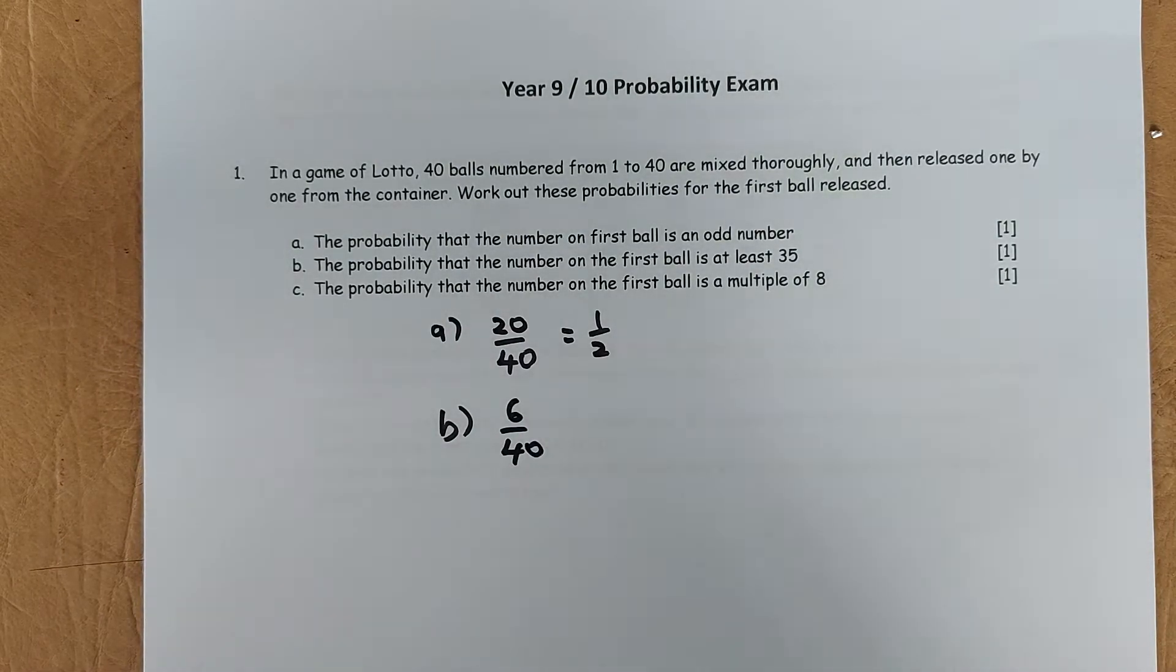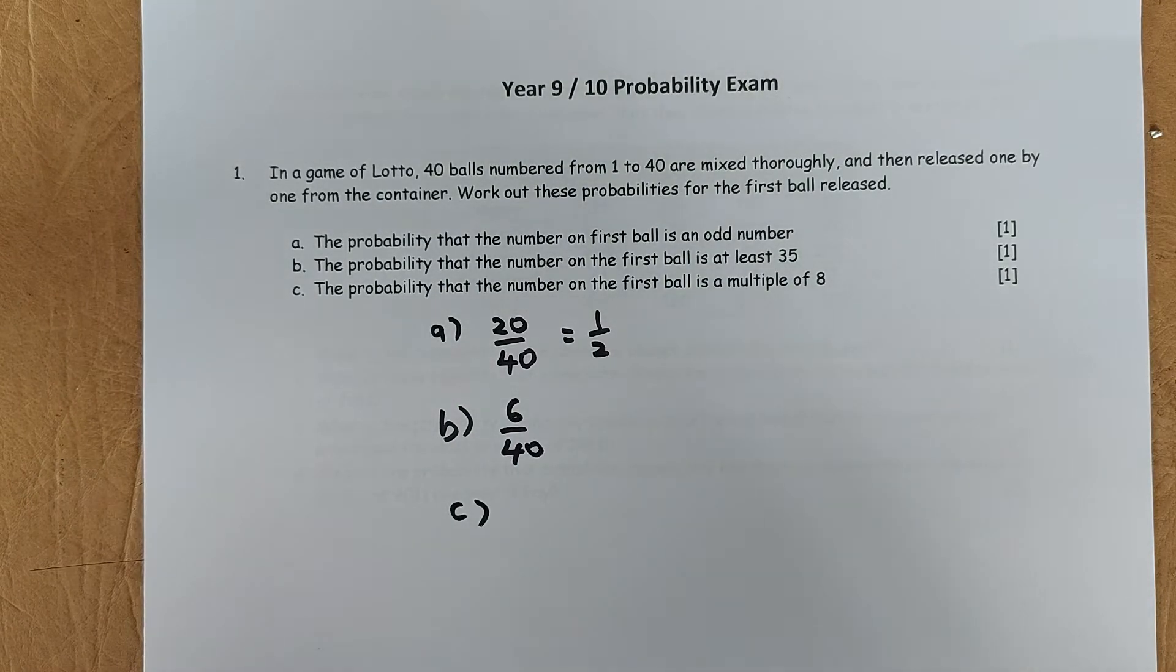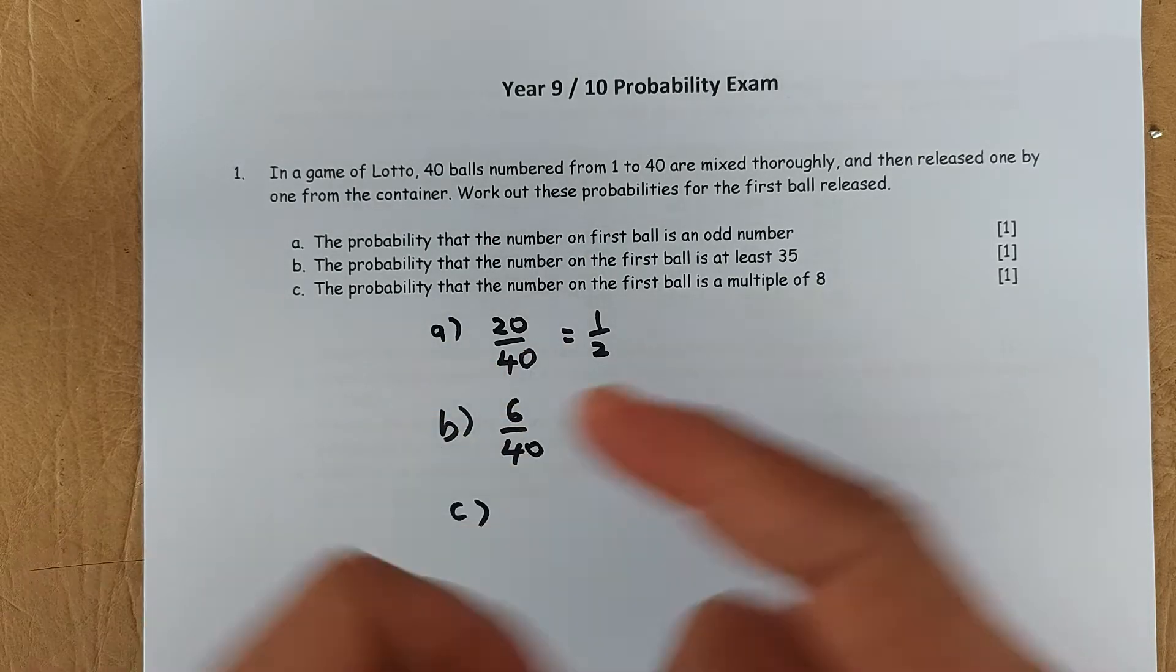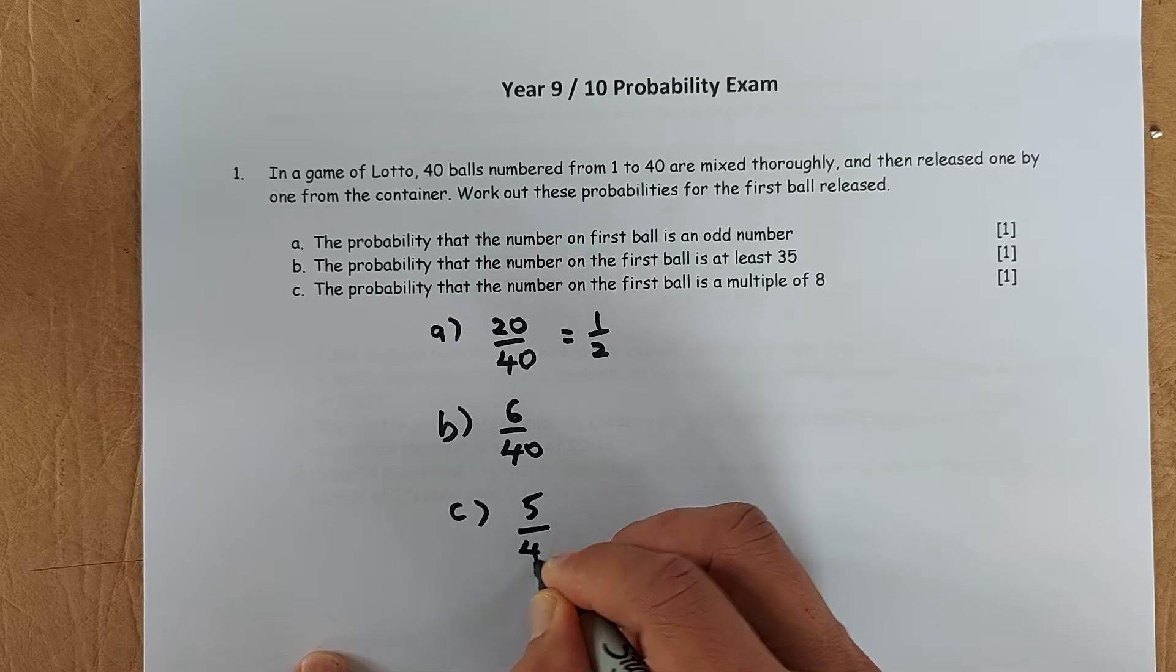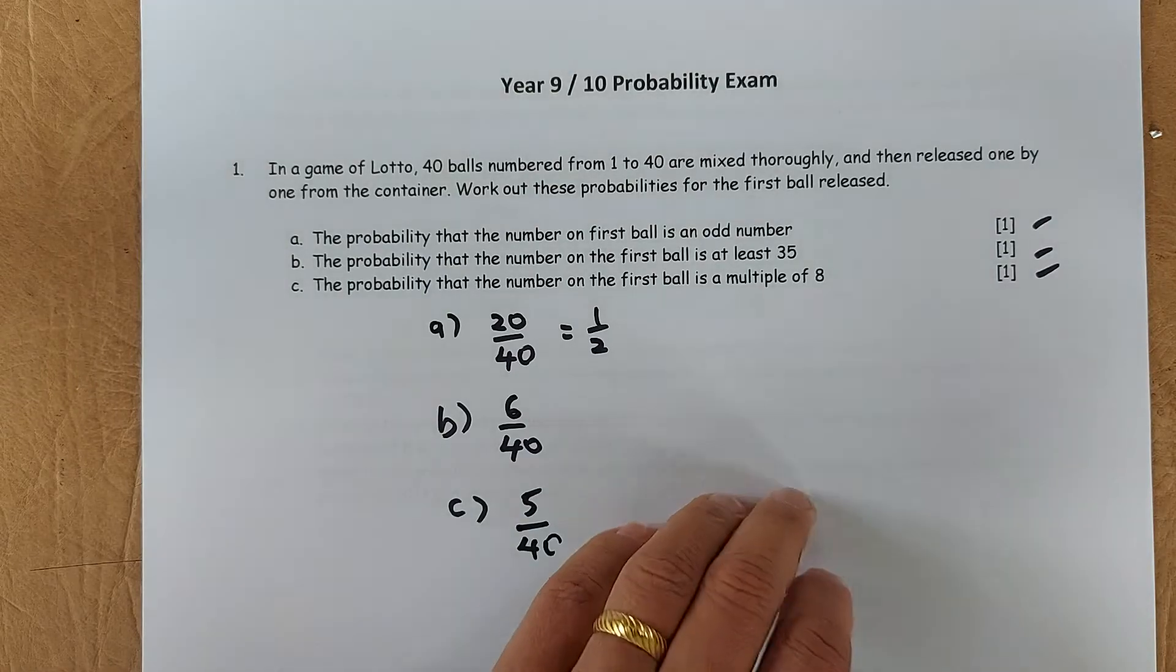And the last question. The probability that the first ball is a multiple of 8. So it could be 8, 16, 24, 32 and 40. There are 5 numbers. So the answer is going to be 5 over 40. And you will get 3 marks if you get all the 3 answers right. Simple, isn't it? Great.